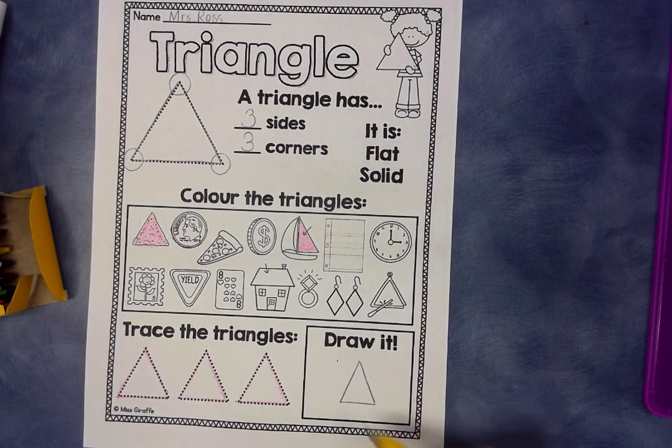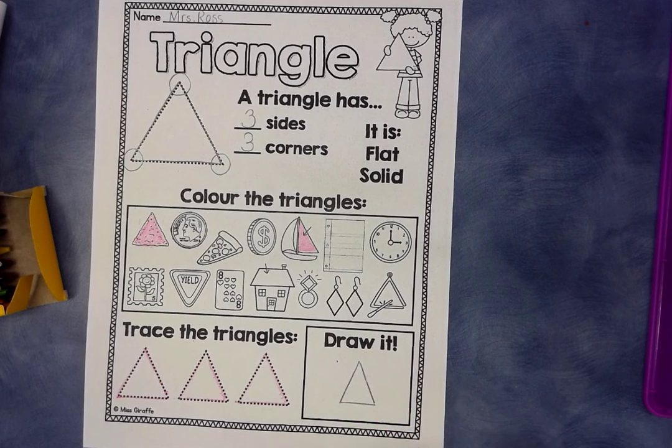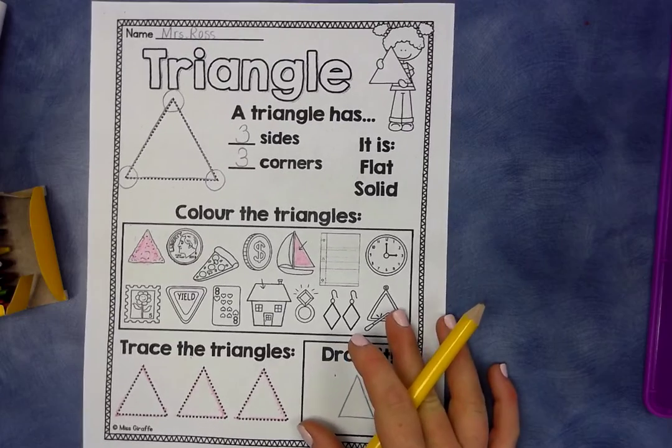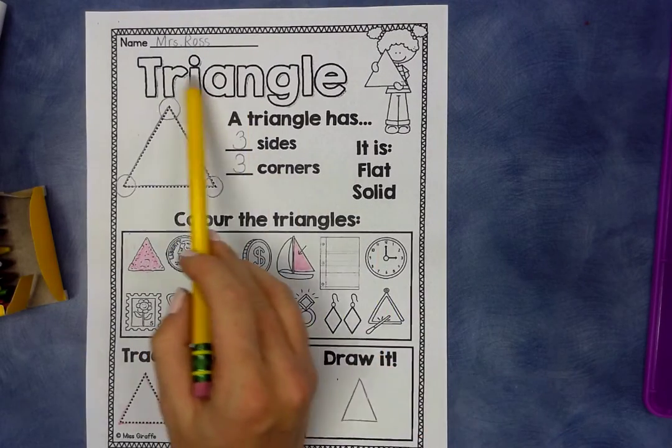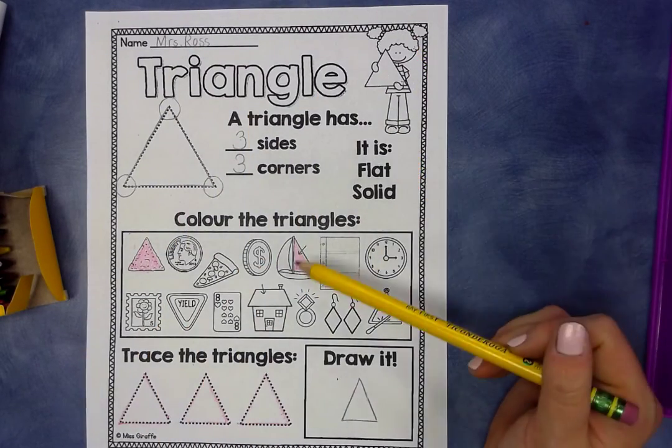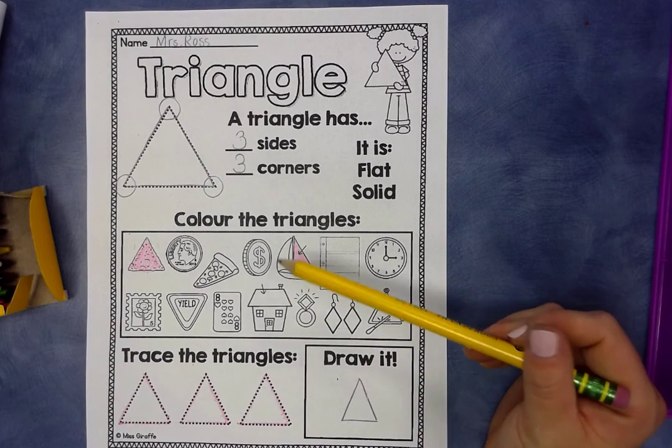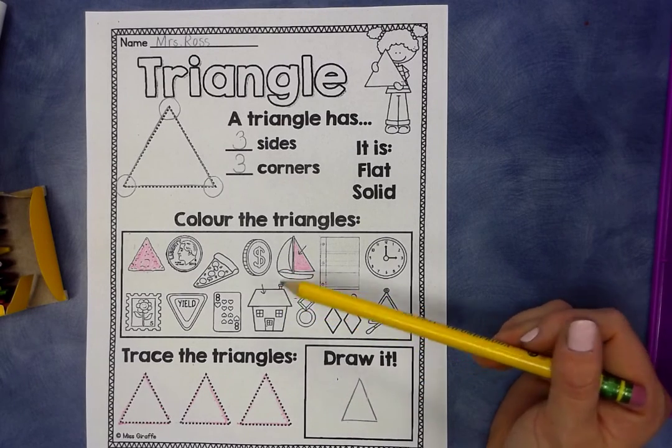There's your triangle. One, two, three sides. One, two, three corners. When you are done with that, you get to color the word triangle and color the girl. Don't color any more of the pictures because you're only coloring the pictures that have triangles in them. All right?